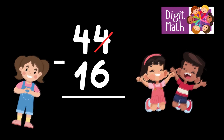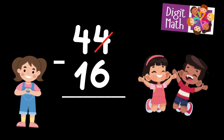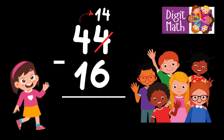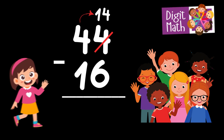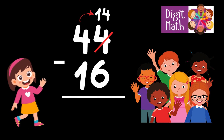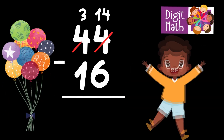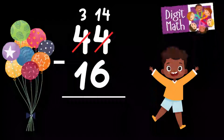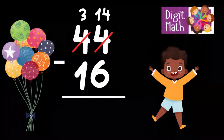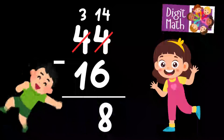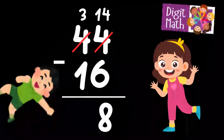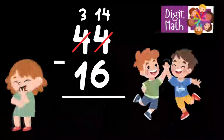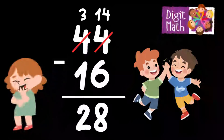In the Units column, we have 4 minus 6. Since it's not possible to subtract 6 from 4, we need to borrow from the Tens column. In the Tens column, we have 4. We take 1 from the Tens, leaving 3 in the Tens column and turning the Units column into 14. Now we have 14 in the Units column. Subtract 6 from 14, which equals 8. In the Tens column, we now have 3. Subtract 1 from 3, which equals 2. So the final result is 44 minus 16 equals 28.